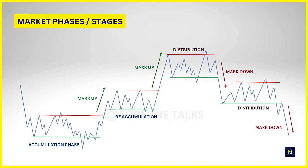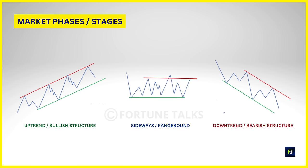We will also get clarity on the major market structure and the minor or internal market structures, and we will talk about the nature of pullbacks for both. Now, a liquid market or stock or any asset goes through several market phases — majorly the accumulation phase, the markup phase, the distribution phase, and the markdown phase. There can also be sub-phases like reaccumulation or redistribution.